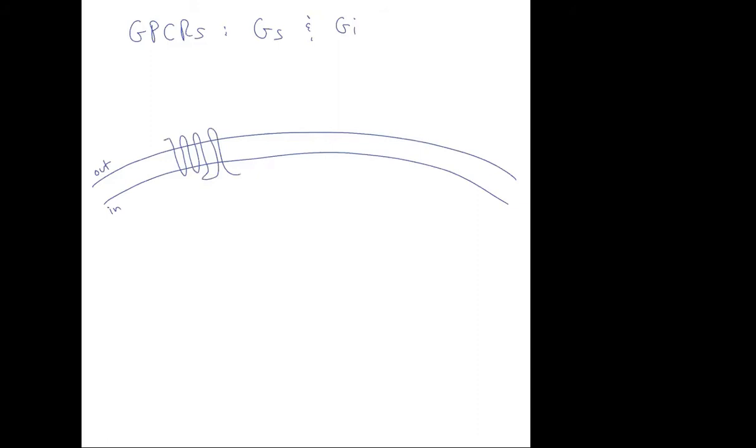There are seven transmembrane spanning domains and the G protein sits in an inactivated state. We can depict that as the gamma, the beta, and the alpha subunit. In this case we're going to add an S to indicate that this is the Gs pathway and it's bound to GDP. That is the inactive state where the heterotrimeric complex is all together.